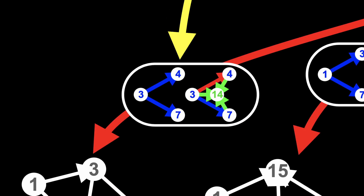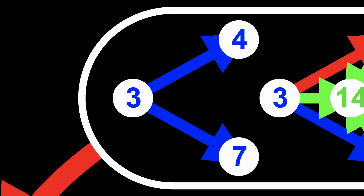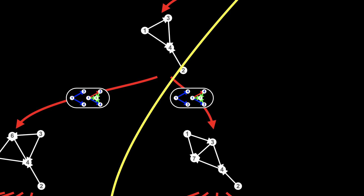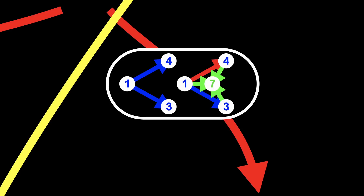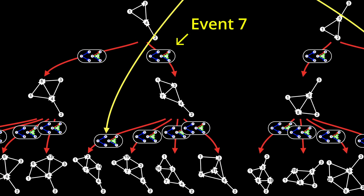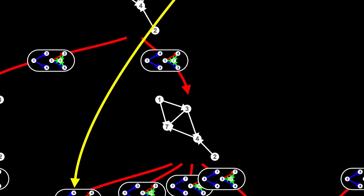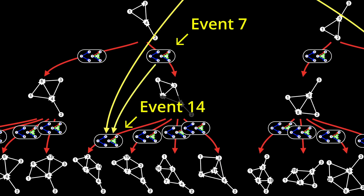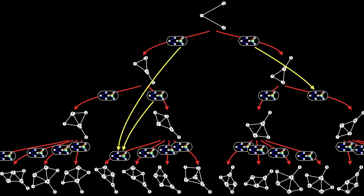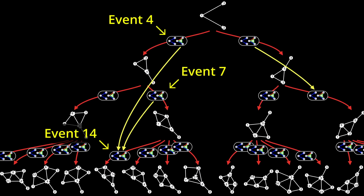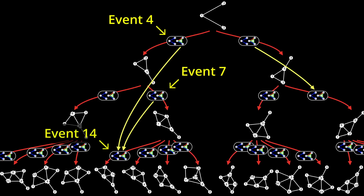The other edge that has to exist before event 14 can happen is the edge from node 3 to node 7. That edge was created by event 7, since it's the event that creates node 7. Event 7 has to happen before event 14, because event 14 matches the edge from node 3 to node 7, which doesn't exist until event 7 creates it. So I'm going to add a yellow arrow from event 7 to event 14. We now have two yellow arrows to event 14 — one from event 4 and the other from event 7 — meaning both event 4 and event 7 have to happen before event 14 can happen.